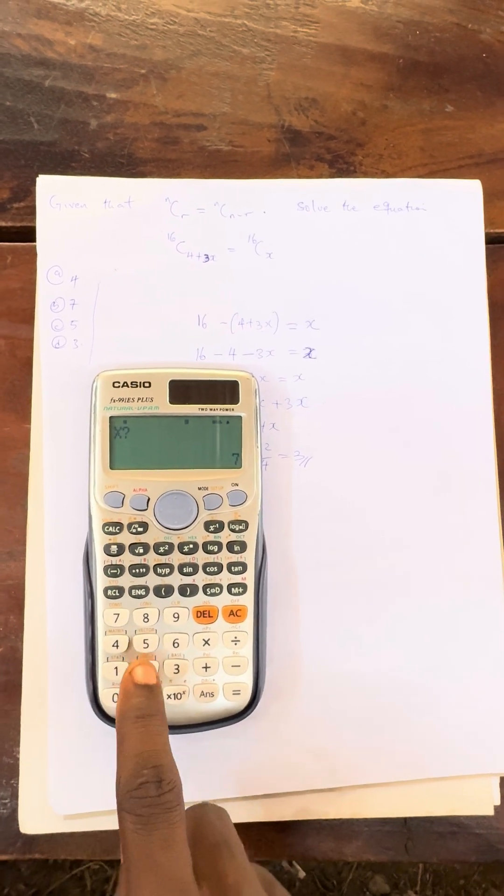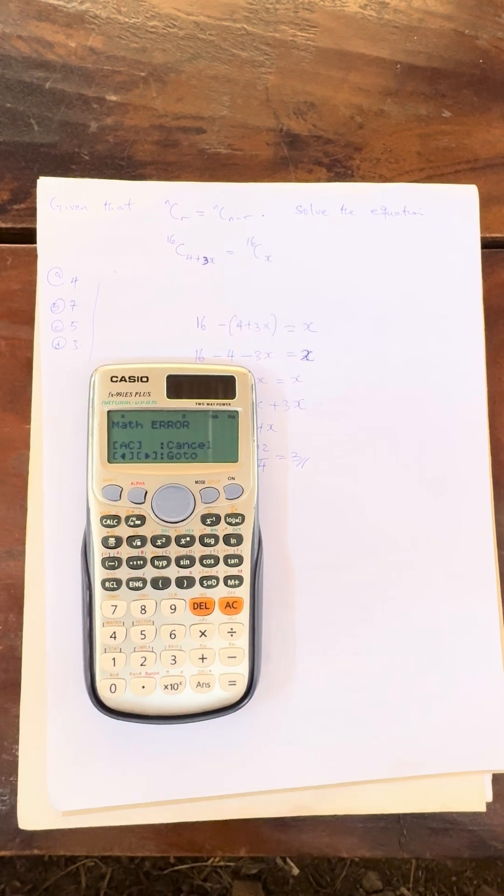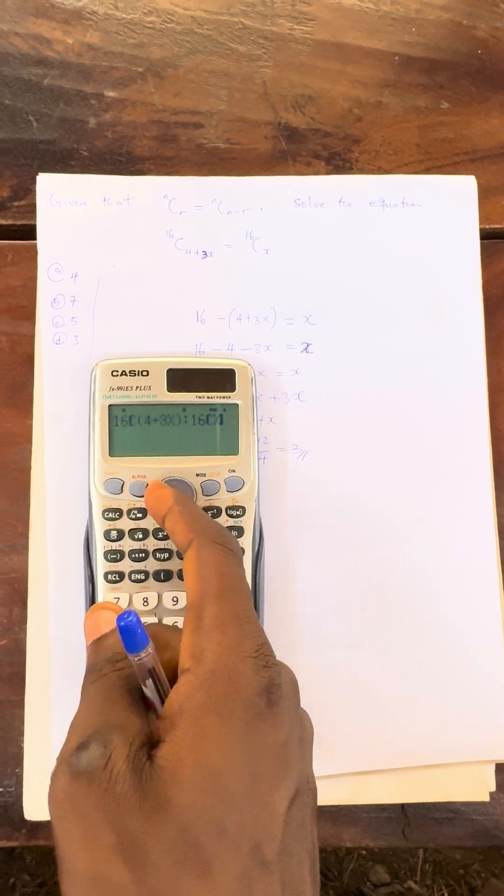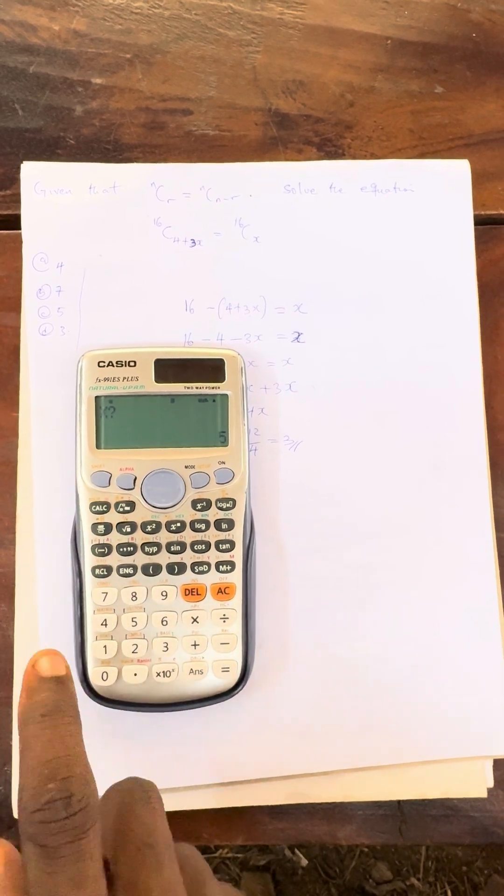Then press calculate. Let's go for option C. Then press 5 and press equals to math error for the option C. Press AC, press backward direction, press calculate.